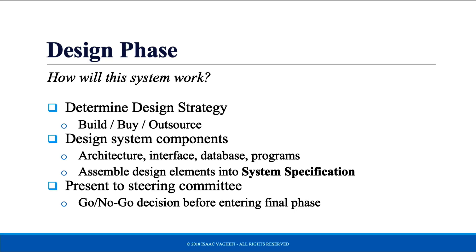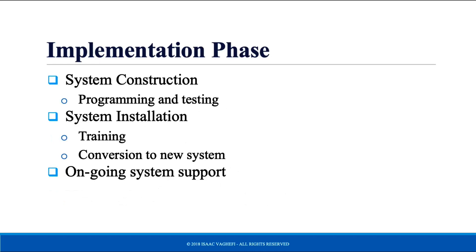The document at the analysis stage is called the system proposal, and it is presented to the steering committee. The design phase is where we decide to either build the system, buy it, or outsource it. Issues addressed in this stage include the architecture of the system, the details of the hardware and software, and the network requirements. The documents produced form a system specification, which the steering committee must review and approve.